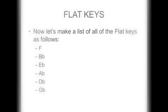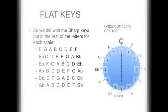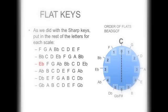Now let's do the same thing with the flat keys. On the left side of your paper, list the flat keys starting at F going down to G flat. F has one flat, so take the first letter of the order of flats — B — and put a flat next to B on your F scale. B flat has two flats, so take B and E and put a flat next to those on your B flat line. E flat has three flats: B, E, and A — put a flat next to those on your E flat line.